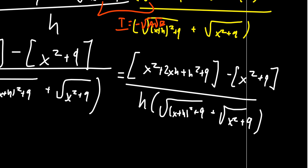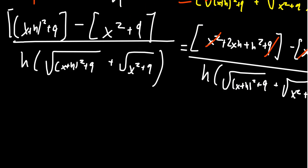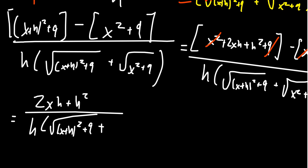So in the numerator, cancel like terms. x squares cancel. The 9 cancels. In which case then, the numerator would simplify to be 2xh plus h squared over h times that square root again, which I must write it down one more time. This is the hardest part about these difference quotients, carrying around your luggage, the denominator. Why do you have to be so complicated?